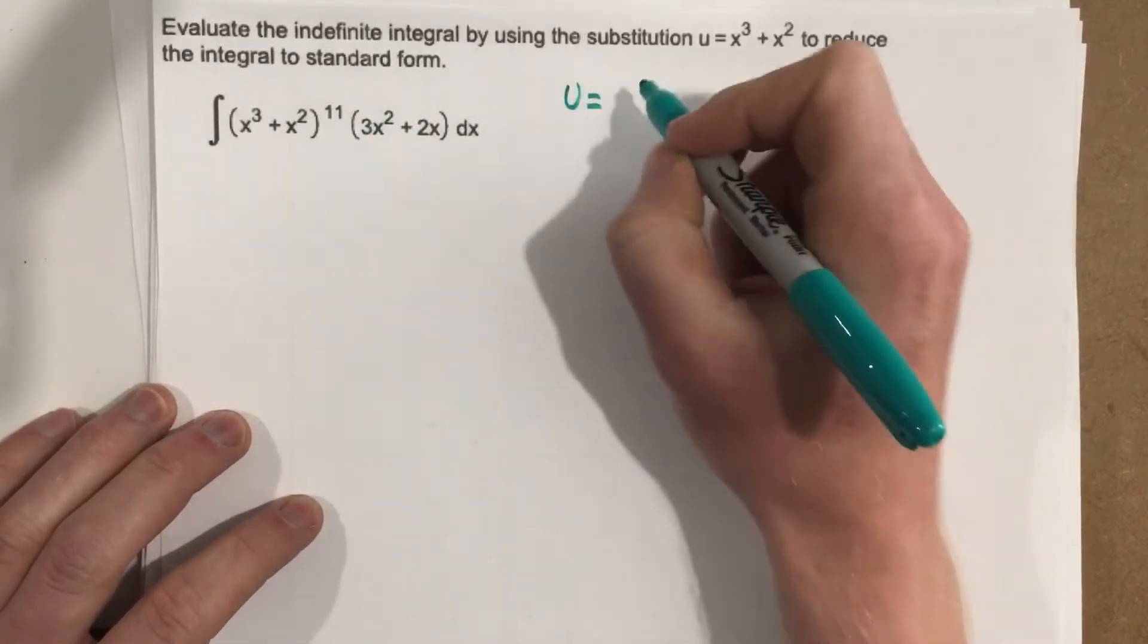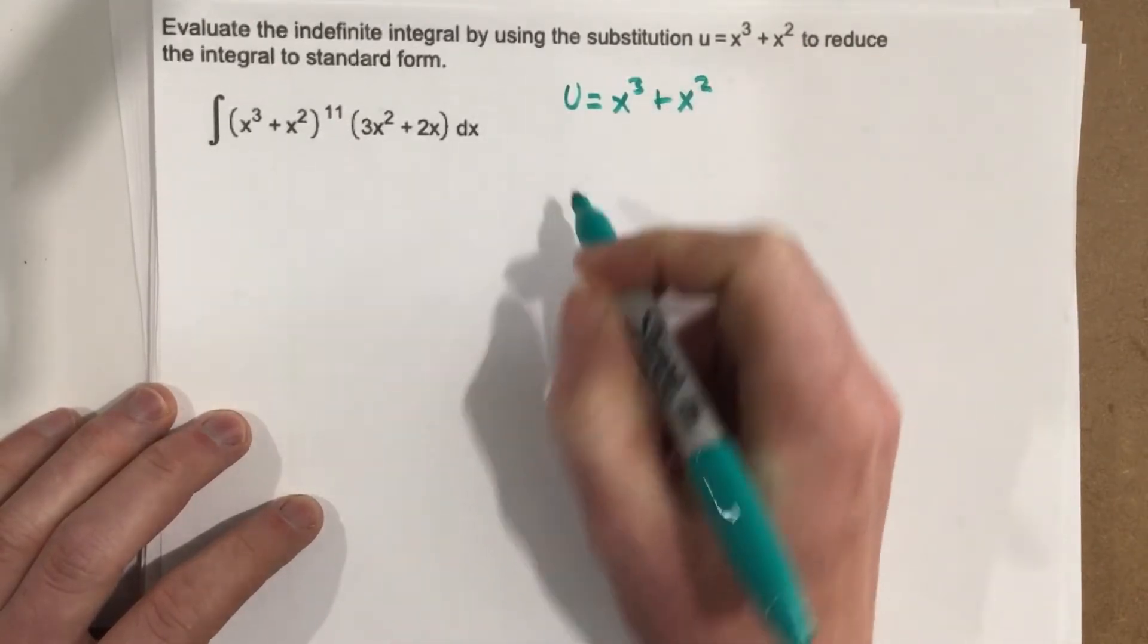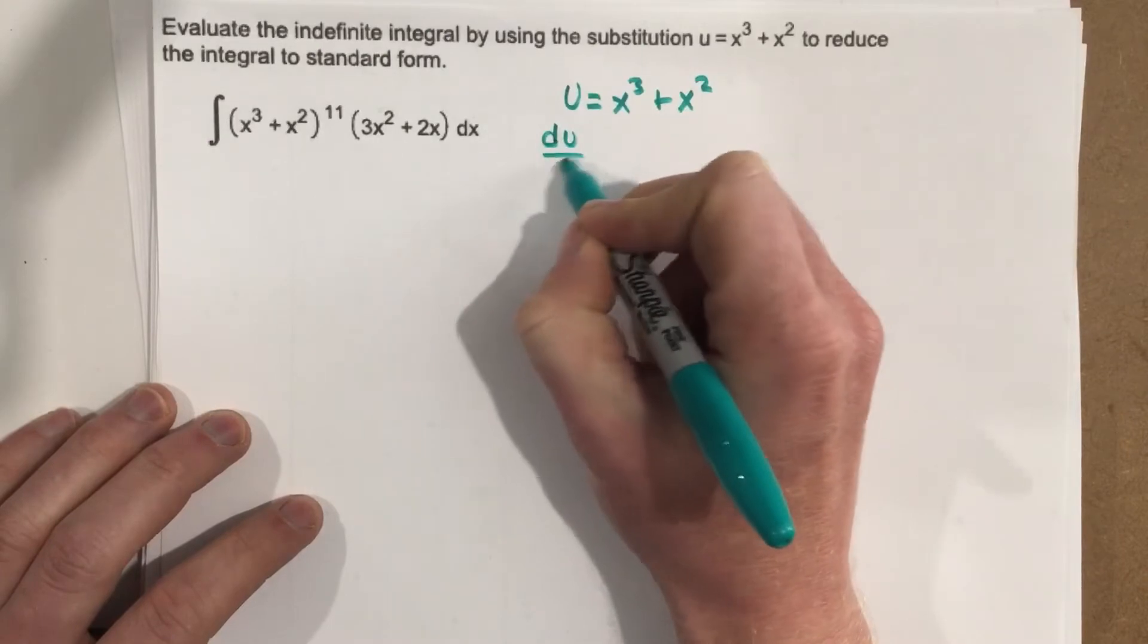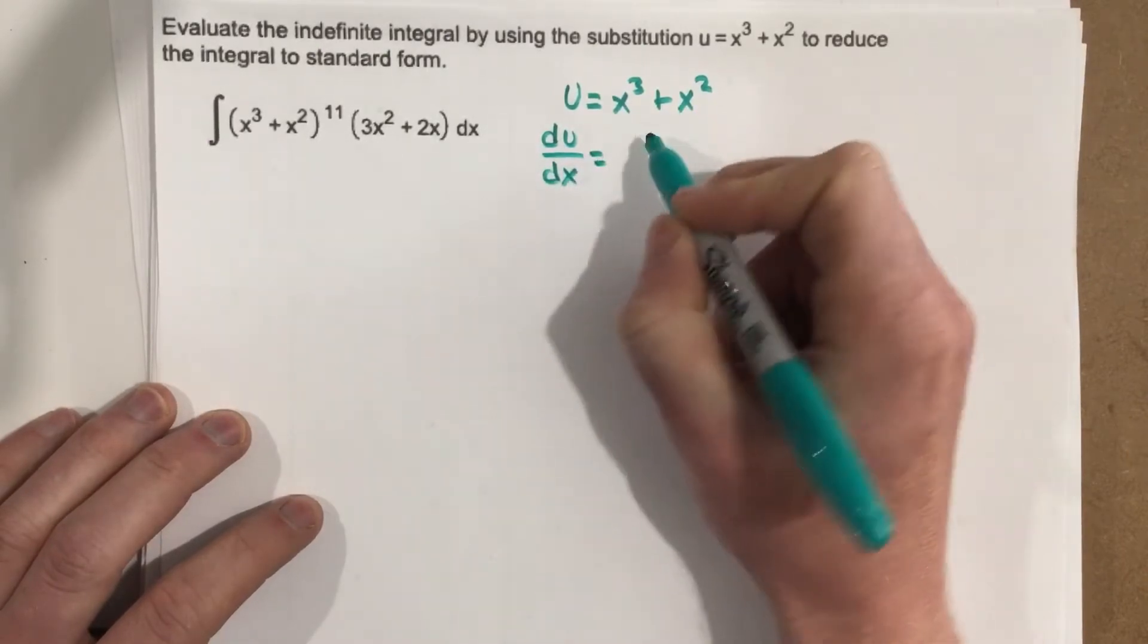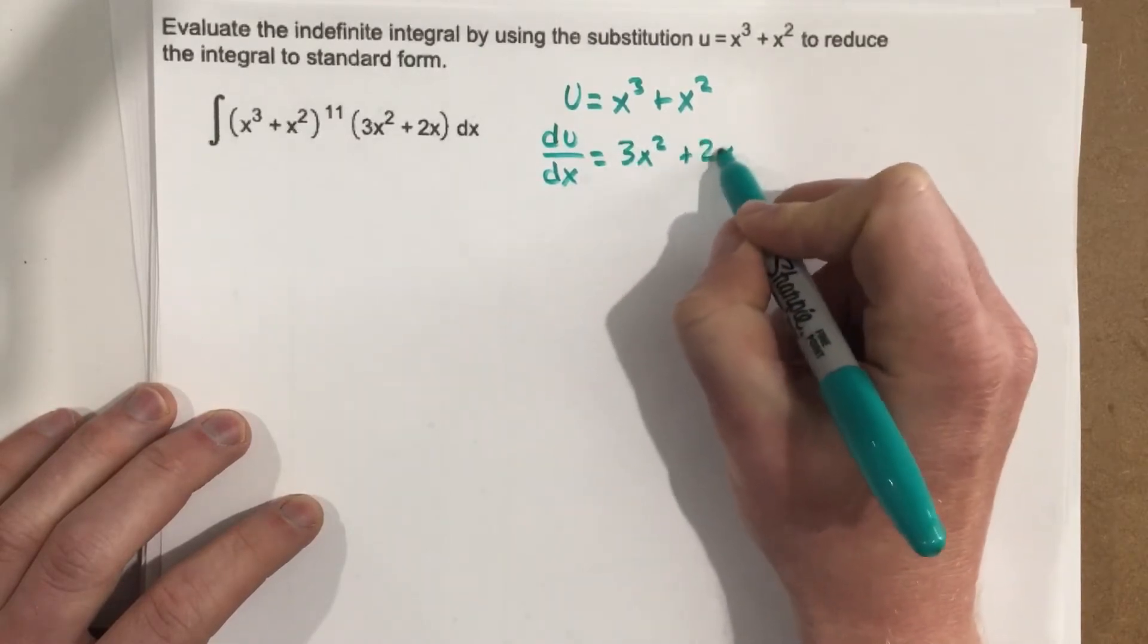u equals x cubed plus x squared. I'm taking the derivative with respect to x. So du over dx equals, well, that'd be 3x squared plus 2x.